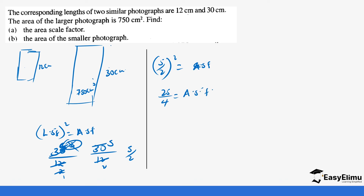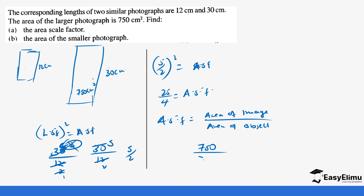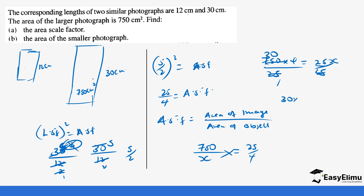We have been told to find the area of the smaller photograph. Using the formula: area of image over area of object equals the area scale factor. The area of the image is 750 cm², and the area of the object is unknown. So 750 over x equals 25 over 4. Cross-multiplying: 750 times 4 equals 25x. Dividing both sides by 25: 750 divided by 25 is 30, and 30 times 4 gives us 120 cm².